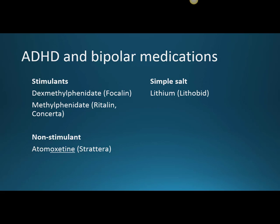Bipolar disorder is a disorder that causes shifts in mood and activity levels, so it can lead to extreme emotional highs and hyperactivity — called mania — or extreme lows which present as depression. Someone with bipolar disorder can have episodes of mania, depression, or both. We treat bipolar disorder with mood stabilizers, and the example today is a simple salt: lithium, or Lithobid.